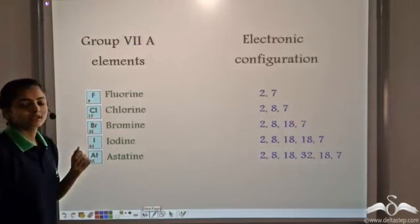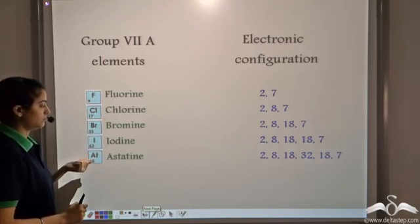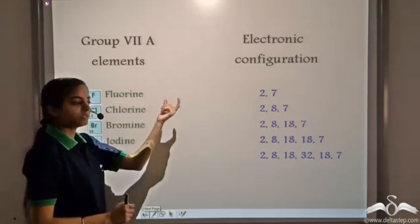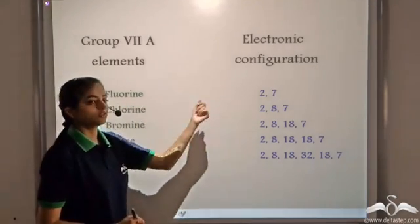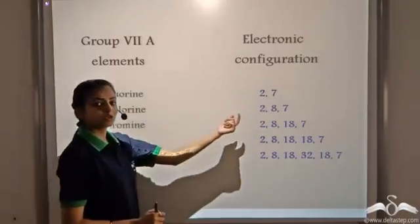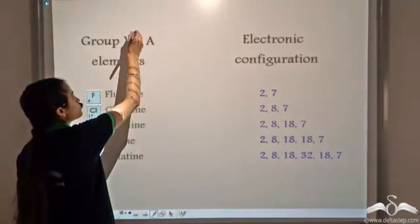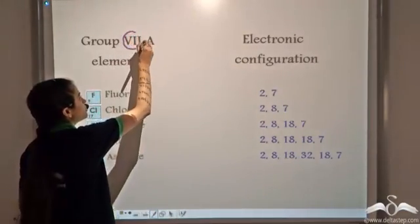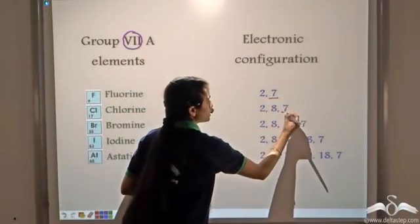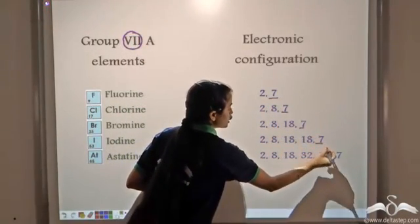Now let's see the group 7A elements. Chlorine, the first element, has electronic configuration 2,7. The next Chlorine has 2,8,7. So the group 7A elements have 7 electrons each in the valence shell.